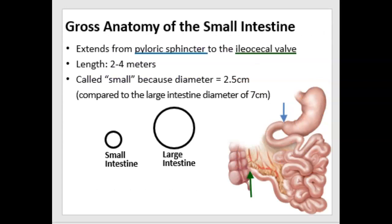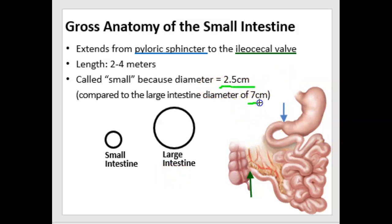The small intestine extends from the pyloric sphincter, which is between the stomach and the small intestine, to the ileocecal valve or sphincter at the very end of the small intestine where it connects to the large intestine. The length of the small intestine is between two and four meters — think of a meter as roughly a yard. It's called small not for its length, but because its diameter is smaller than the large intestine. The small intestine's diameter is about two and a half centimeters, compared to the large intestine's seven centimeters — almost three times that.